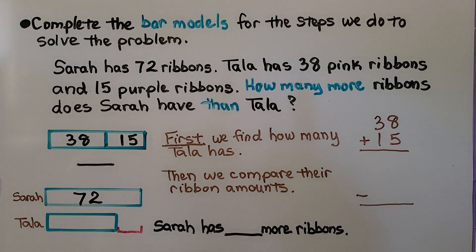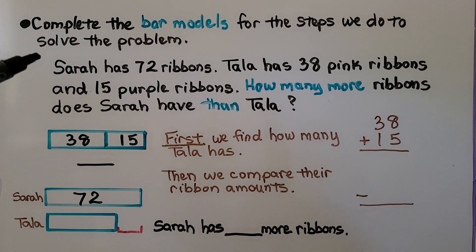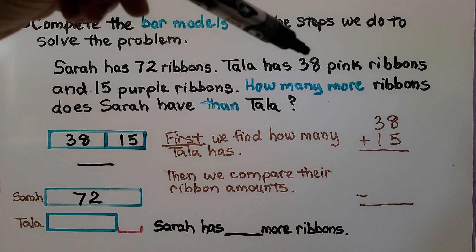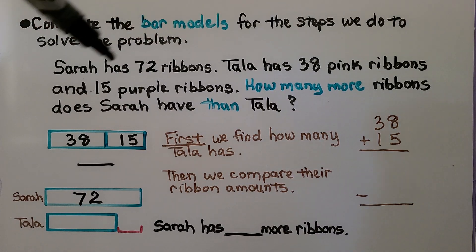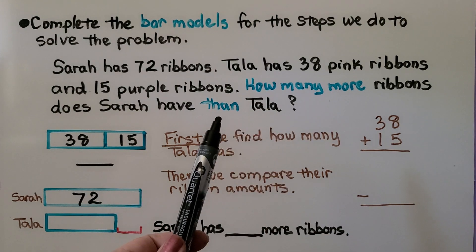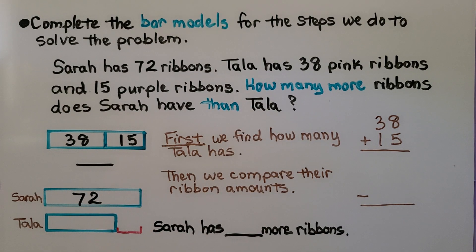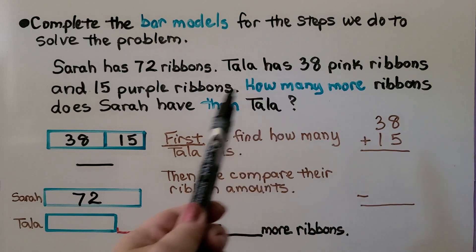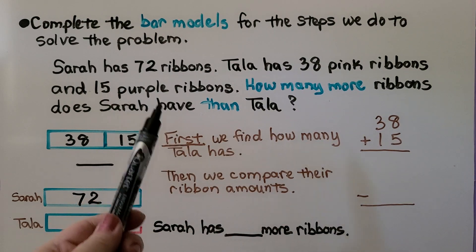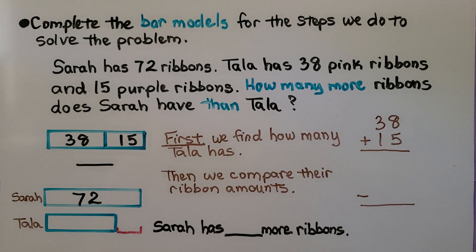Now complete the bar models for the steps to solve this problem. Sarah has 72 ribbons. Tala has 38 pink ribbons and 15 purple ribbons. How many more ribbons does Sarah have than Tala? We see the clue words 'how many more than,' so we know we're comparing two numbers. Tala's ribbons are in two parts — 38 and 15 — so first we need to find how many Tala has. We need to add 38 and 15.